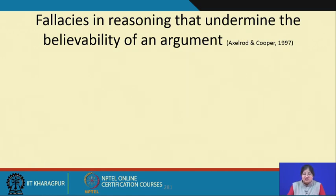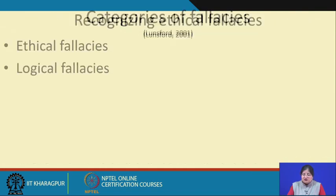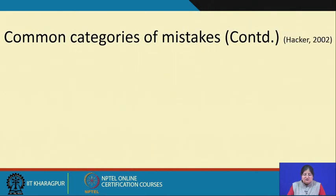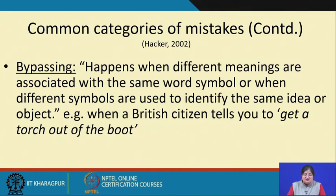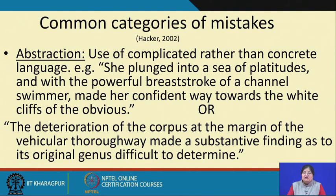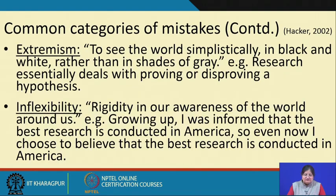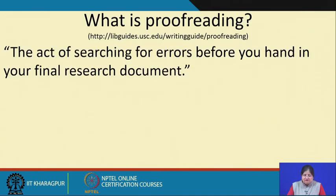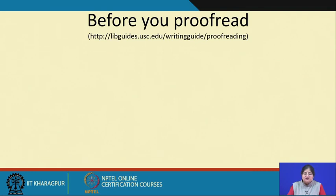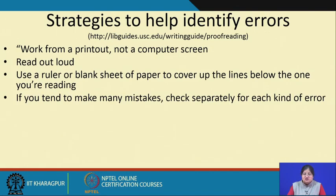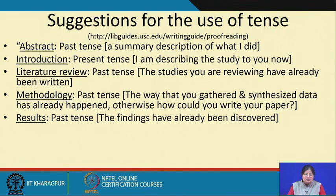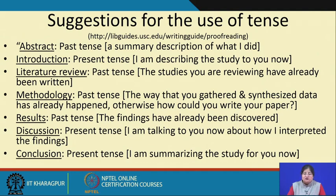We talked about strategies for detailed revisions — how you look for patterns of opposition, how do you evaluate the logic of an argument, testing for believability, consistency and completeness, and a checklist for global revisions. Then we discussed the mistakes and fallacies you can fall prey to while writing, which forms part of the revision — checking for fallacies and mistakes. We also discussed common categories of mistakes and language limiters, and then editing and proofreading: how you prepare yourself to proofread, strategies to help identify your errors, individualizing the act of proofreading, and suggestions for the use of tense in different parts of the paper.